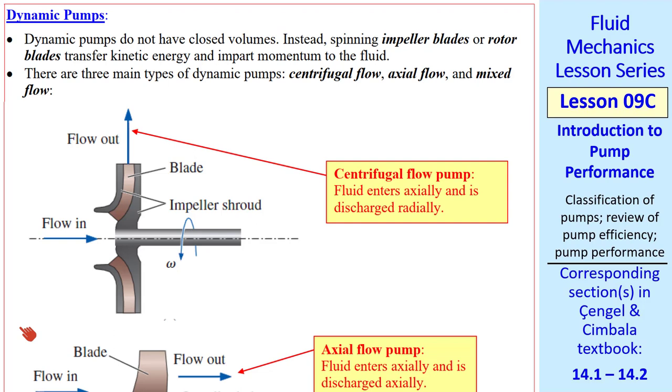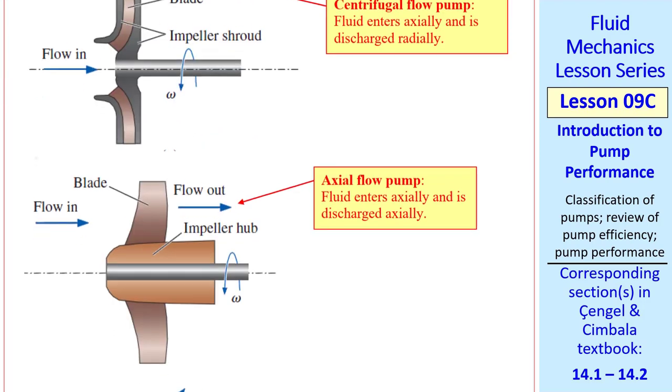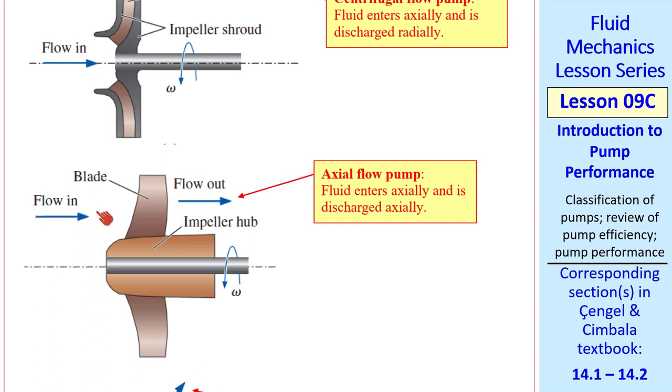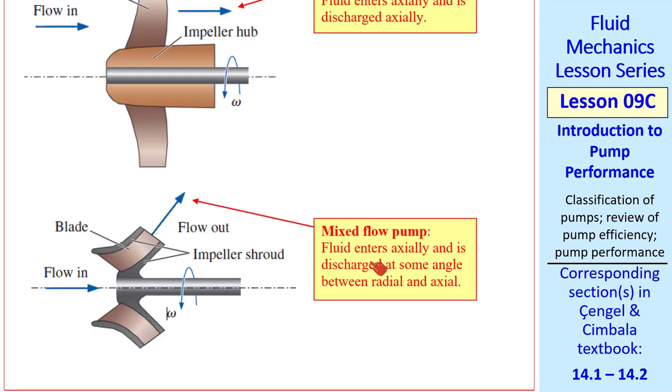For a centrifugal flow pump, fluid enters axially and discharges radially. For an axial flow pump, the flow comes in axially and discharges axially, in the same direction. Your standard house fan is of this type. And then mixed flow pumps have fluid entering in axially, but discharging at some angle between axial and radial.